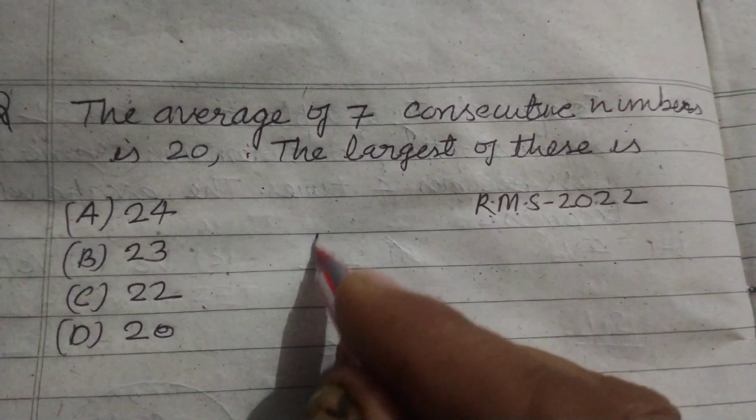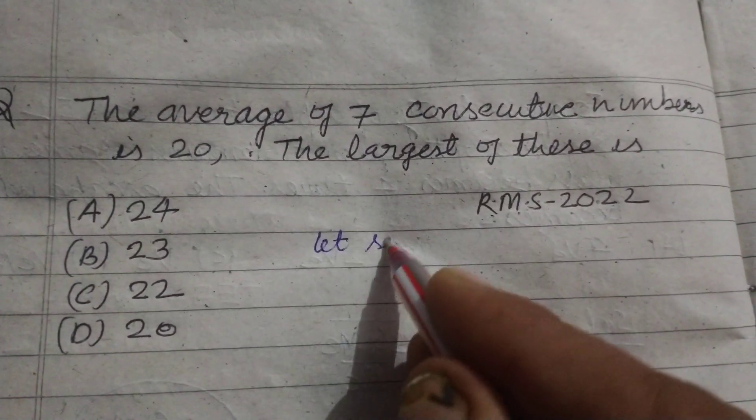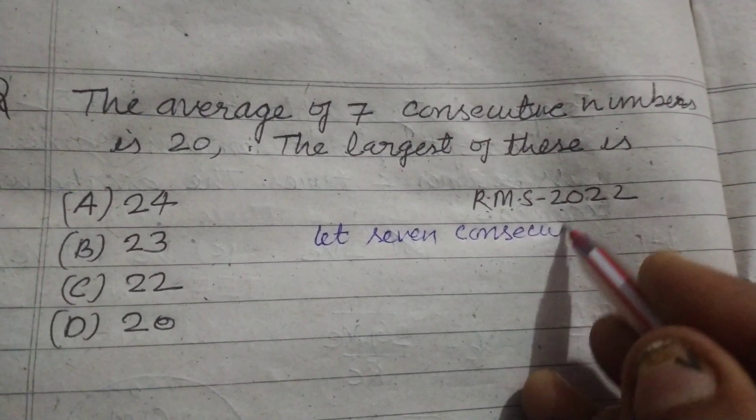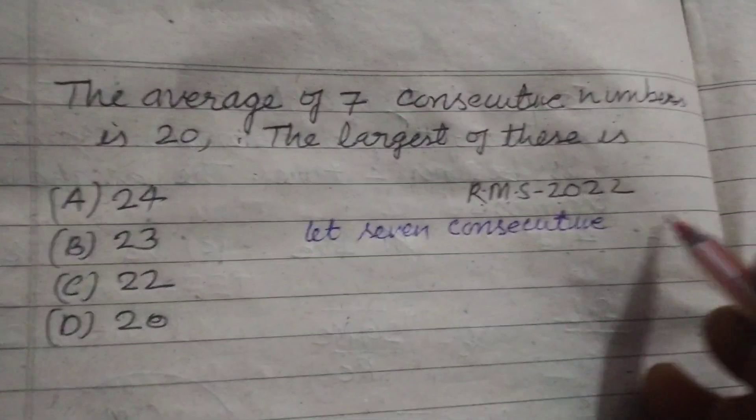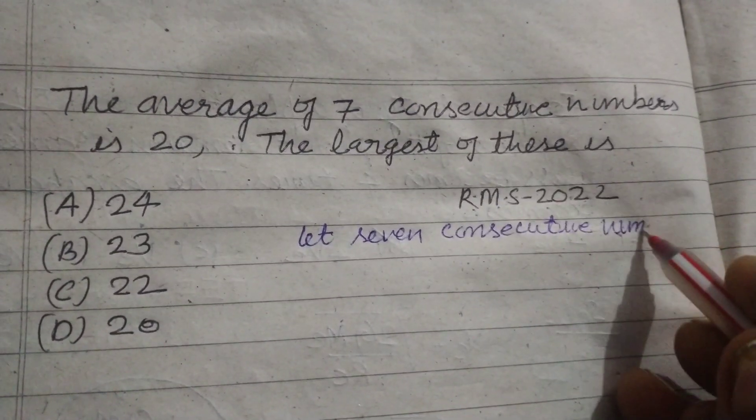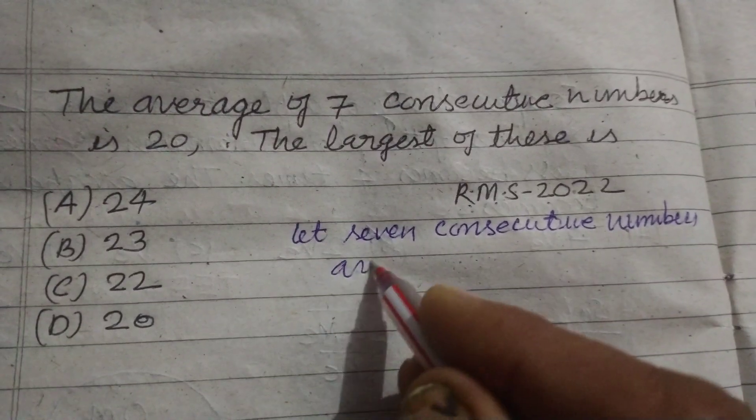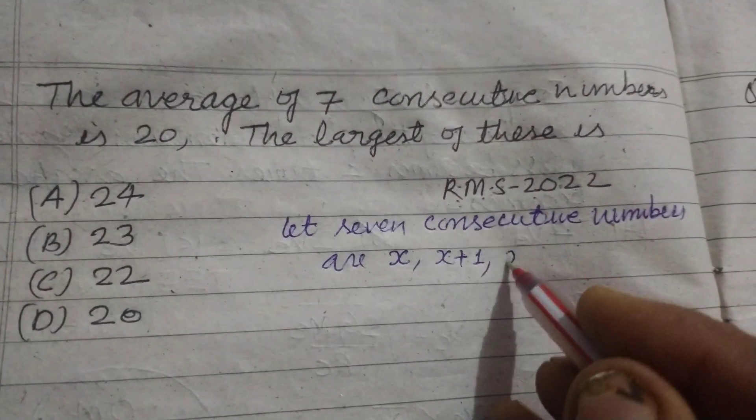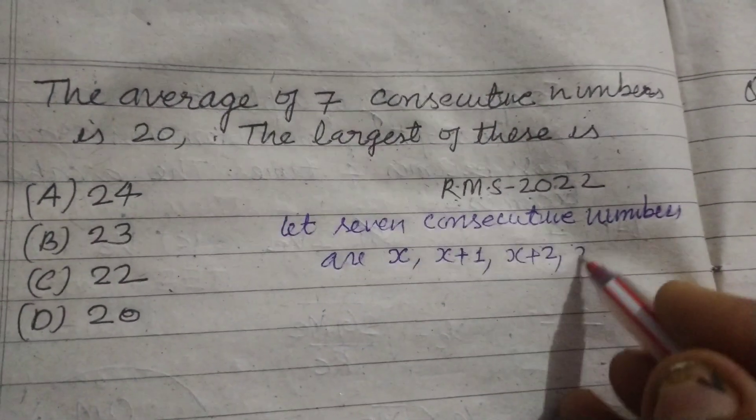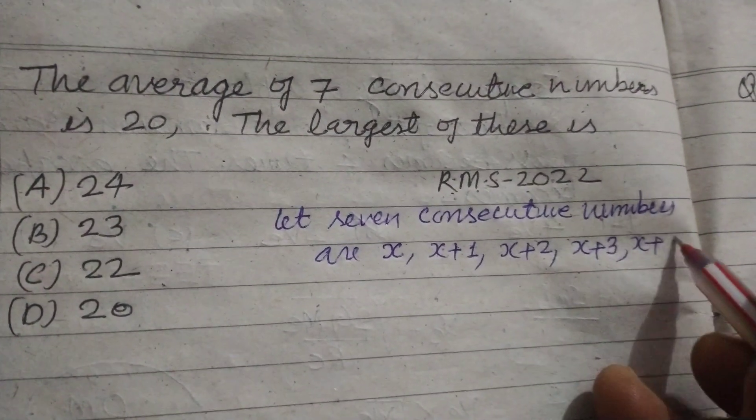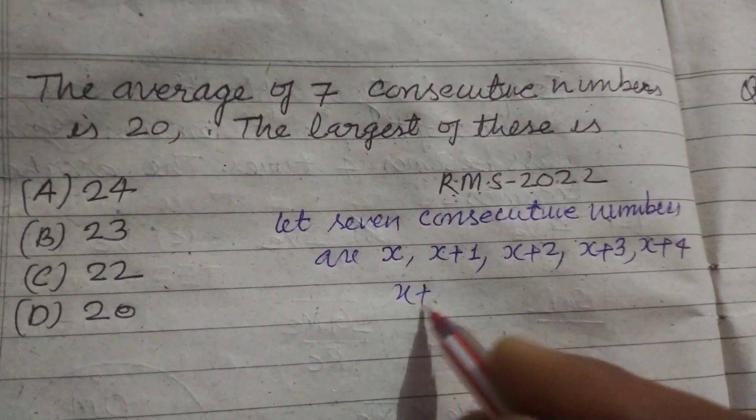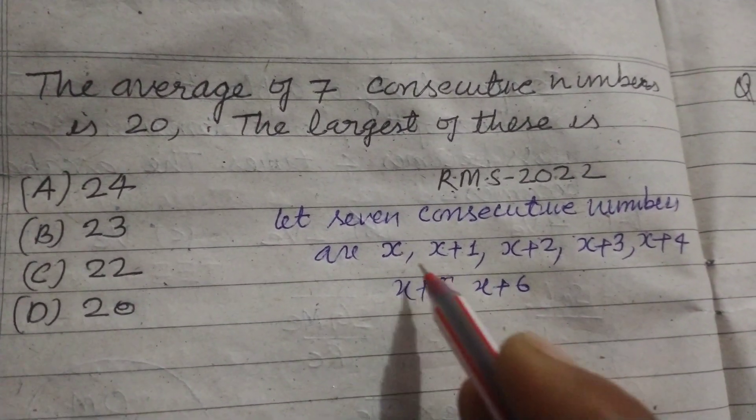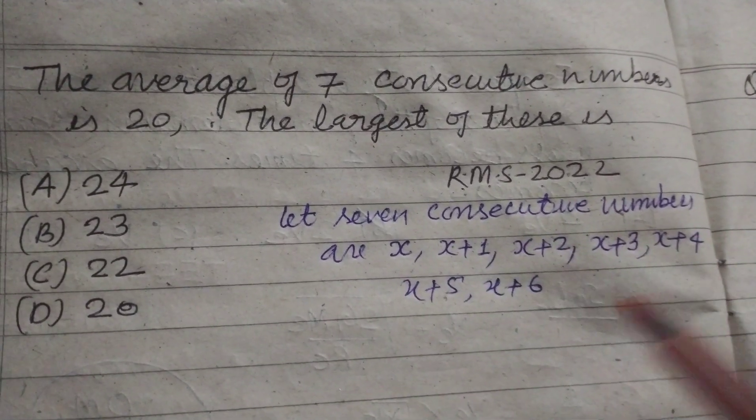So let 7 consecutive numbers be x, x+1, x+2, x+3, x+4, x+5, x+6. These are consecutive numbers which come one after another.